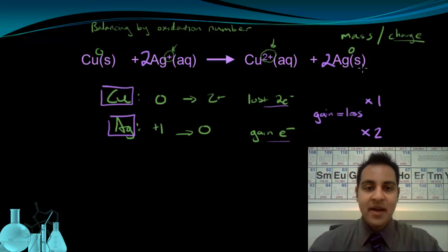And now this reaction is balanced for mass and for charge. I have two silvers on each side, I have one copper on each side. I have a total of +2, because there's two +1s on the left, and I have a total of +2 on the right, because the copper has a +2 charge. So now this reaction is balanced for mass and charge.